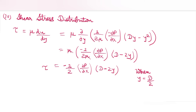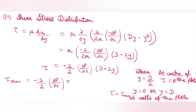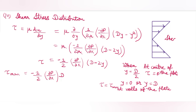In this equation, ∂P/∂x and D are constants, so τ varies linearly with y. Applying boundary conditions: at the center of the plate y = D/2, τ = 0. At the walls (y = 0 or y = D), τ is maximum. Placing y = 0: τ_max = −(1/2)(∂P/∂x)·D. The shear stress distribution is linear — zero at the center and maximum at the walls, the same pattern as in the circular pipe case.